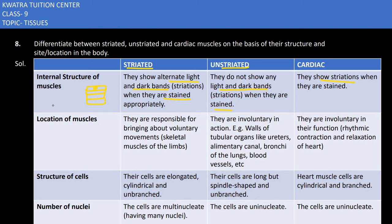Regarding location: striated muscles are involved in voluntary movements, like our limbs — we can move our hands when we want to, so we are in control. Unstriated muscles are involuntary, functioning on their own — found in the walls of tubular organs like the uterus, alimentary canal, bronchia, and blood vessels.